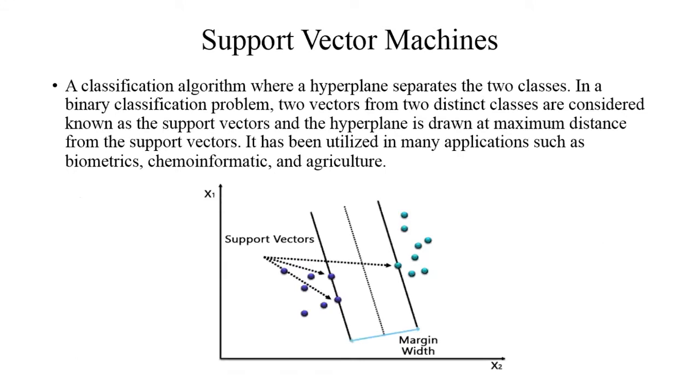Support vector machines: a classification algorithm where a hyperplane separates two classes. In a binary classification problem, two vectors from two distinct classes are considered known as the support vectors, and the hyperplane is drawn at maximum distance from the support vectors. It has been utilized in many applications such as biometrics, chemoinformatics, and agriculture. This figure shows the support vectors and the margin width.